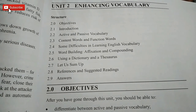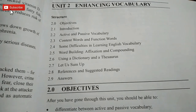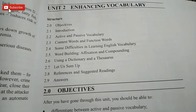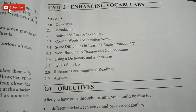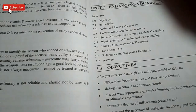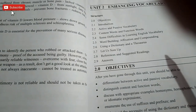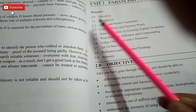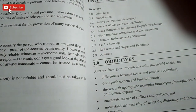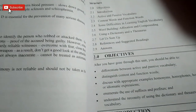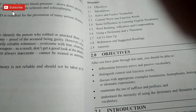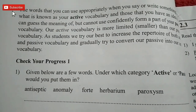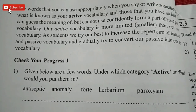Hello students, today we start the second unit of BEGS 183. So without wasting time, let's get started. We begin from here — active and passive vocabulary. Active vocabulary means the words we know and can easily use.